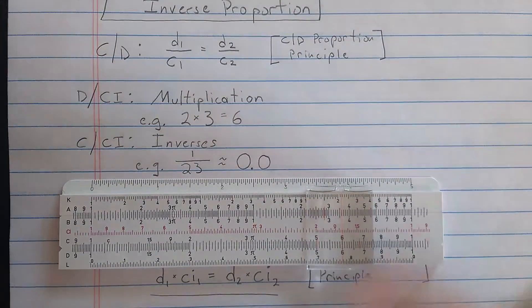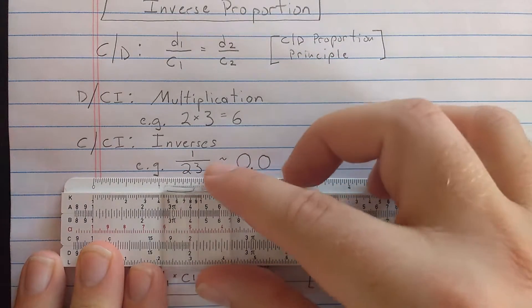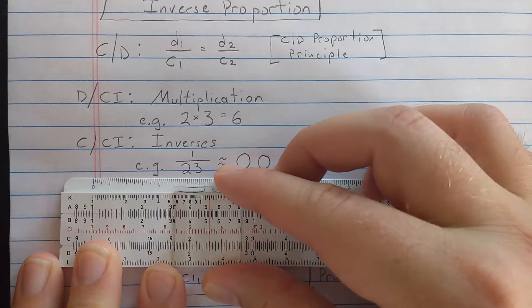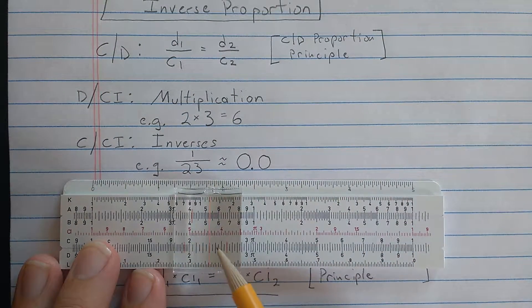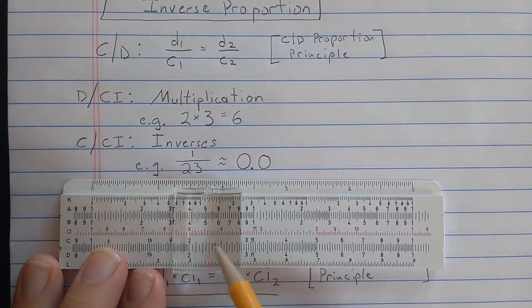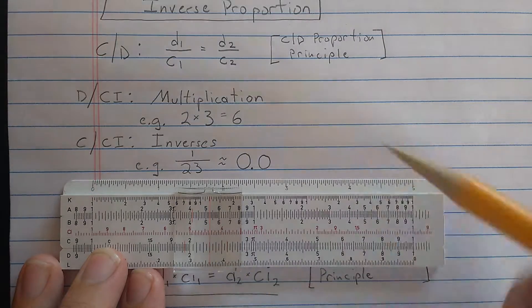For example, to find the inverse of 23, you find 23. So here's 2.1, 23. On the C scale, you read the result on the CI scale. Remember, CI scale is reading backwards. So 4, 1, 2, 3, 4, 3, 5.